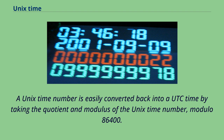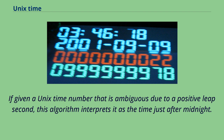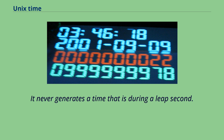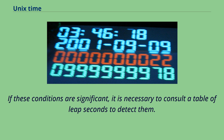A Unix time number is easily converted back into a time by taking the quotient and modulus of the Unix time number modulo 86,400. The quotient is the number of days since the epoch, and the modulus is the number of seconds since midnight UTC on that day. If given a Unix time number that is ambiguous due to a positive leap second, this algorithm interprets it as the time just after midnight, and never generates a time that is during a leap second. If given a Unix time number that is invalid due to a negative leap second, it generates an equally invalid UTC time. If these conditions are significant, it is necessary to consult a table of leap seconds to detect them.